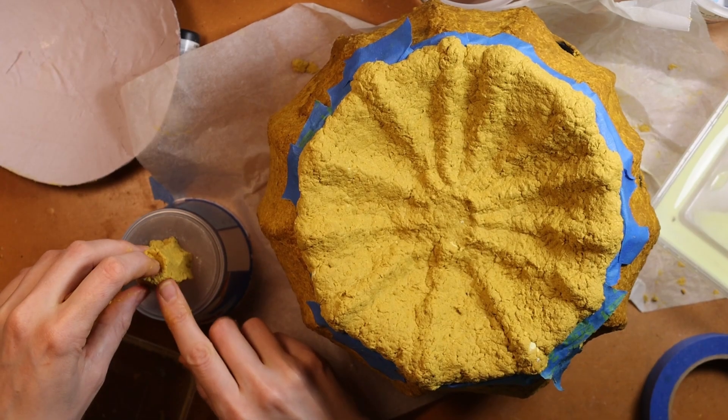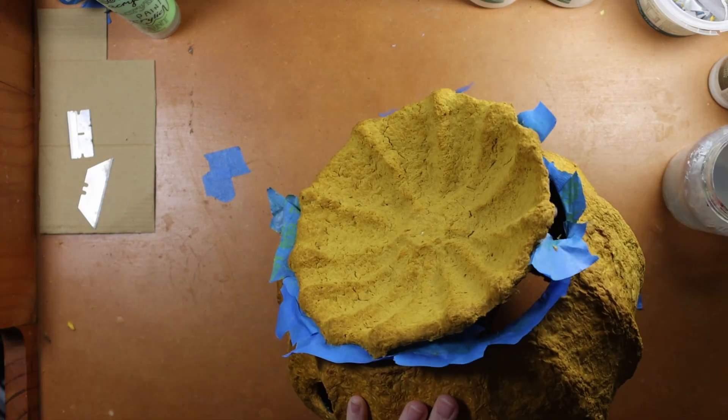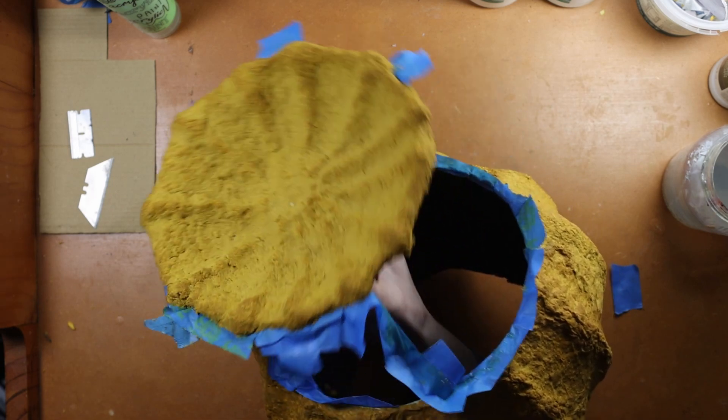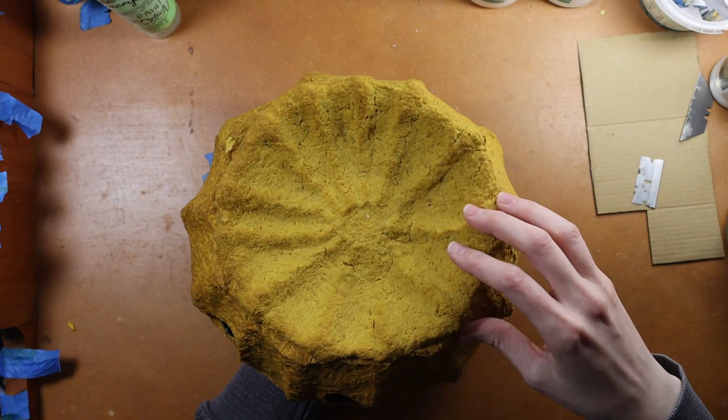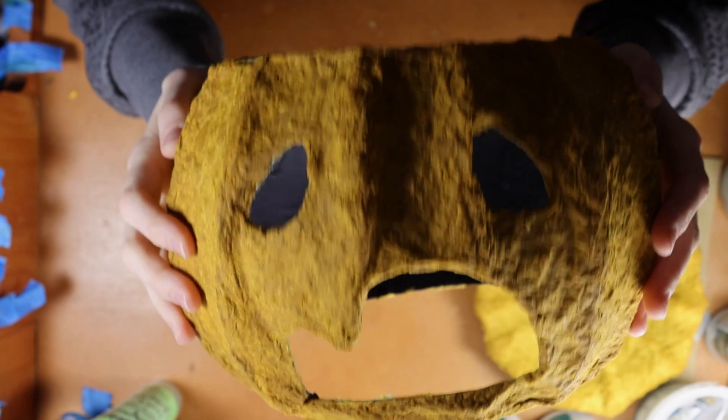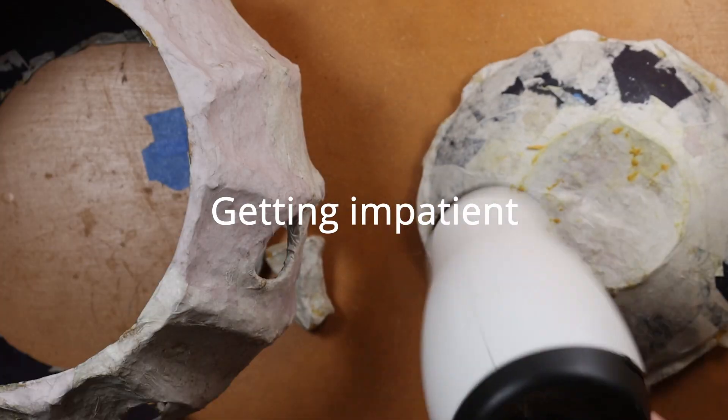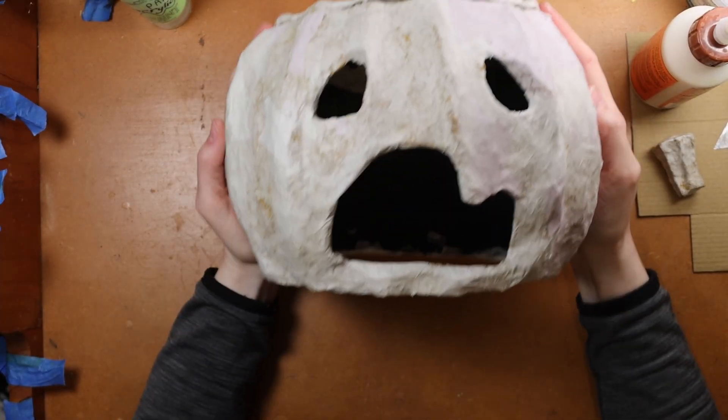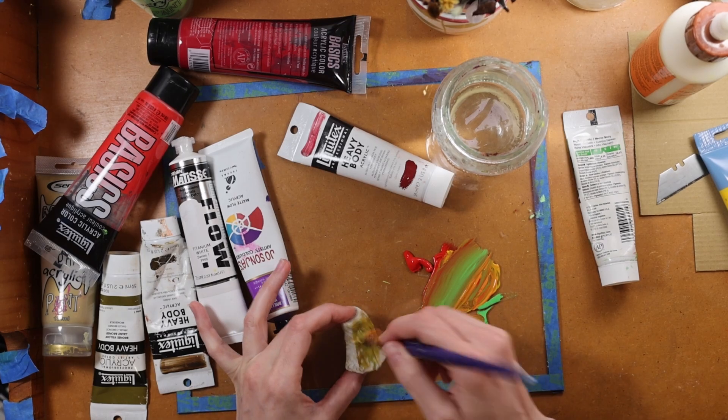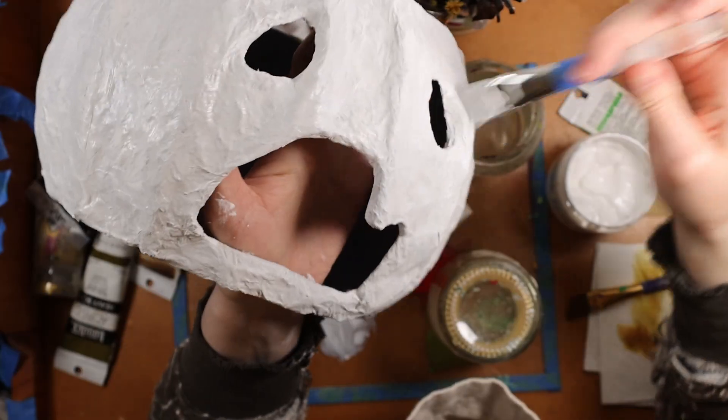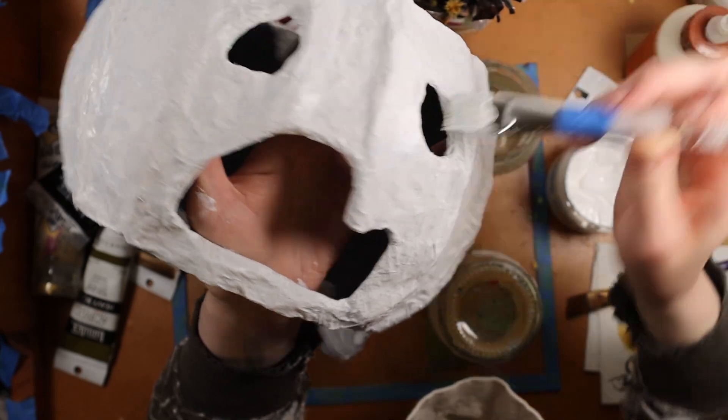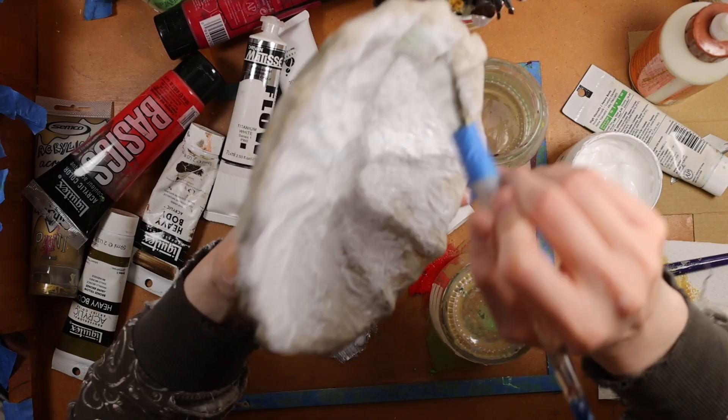This is taking long enough. So one coat of paper mache later, and let's get it painted. A dead greenish color for the stem, and then a base coat of white gesso to even out the paper seams on the pumpkin. Now to make it orange.